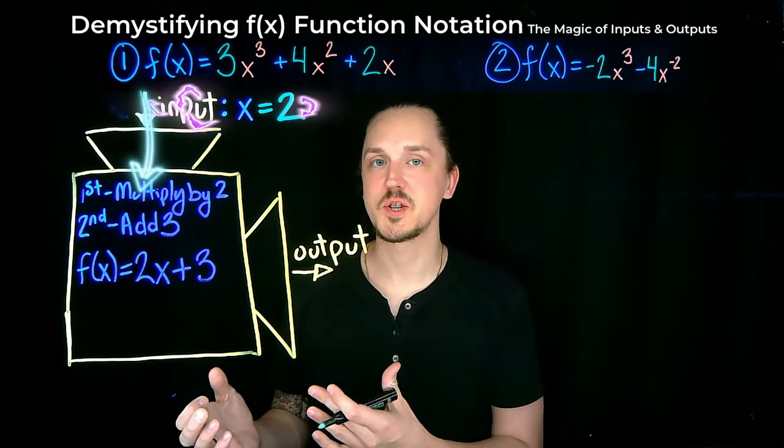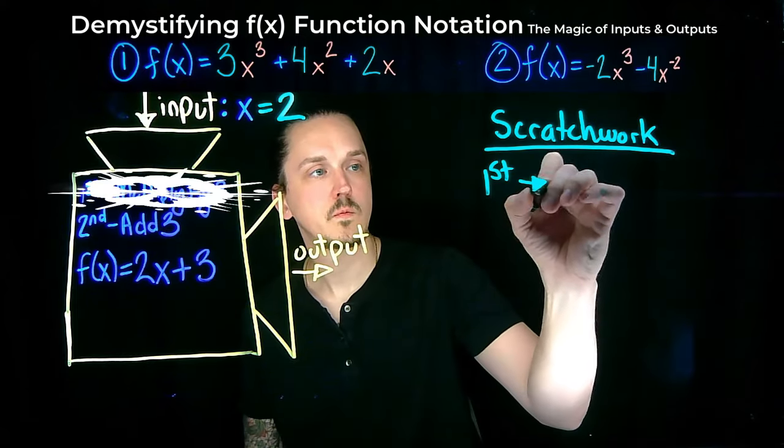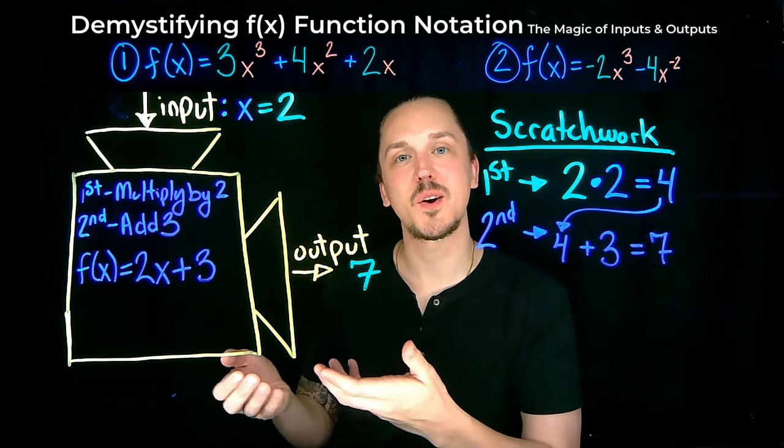So when we feed the number two into our machine, it just follows its recipe. The machine takes in the number two, first multiplies it by two, and then it adds three. Our machine gives us the number seven as our output.